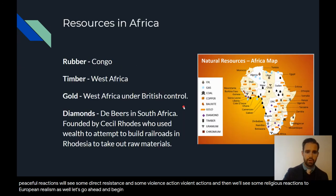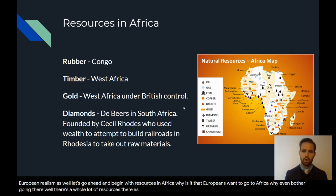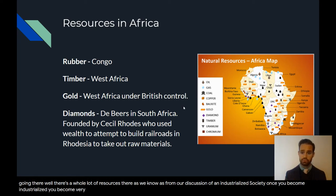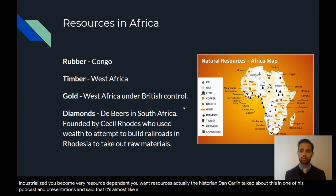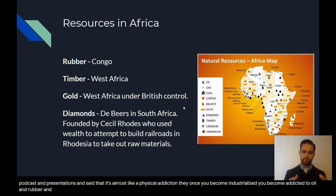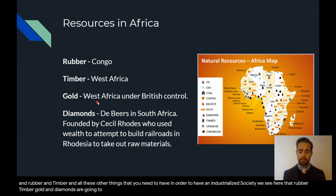Let's begin with resources in Africa. Why is it that Europeans want to go to Africa? There's a whole lot of resources there. As we know from our discussion of an industrialized society, once you become industrialized, you become very resource dependent — almost like a physical addiction. Once you become industrialized, you become addicted to oil, rubber, timber, and all these other things. Rubber, timber, gold, and diamonds are going to be major resources in Africa that Europeans want to exploit.